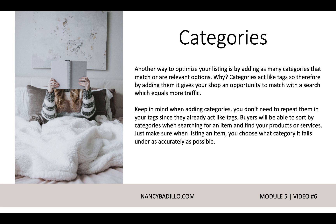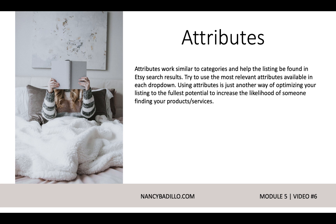Categories are another way to optimize your listing. Add as many categories that match or are relevant to your listing. Categories act like tags, so adding them is an opportunity to match with the search and generate more traffic. You don't need to repeat them in your tags since they already act like tags. Buyers can sort by categories when searching, so make sure you choose the most accurate category for each listing. Attributes are similar to categories and also help your listing be found in the Etsy search results — try to use the most relevant attributes available in each drop-down.